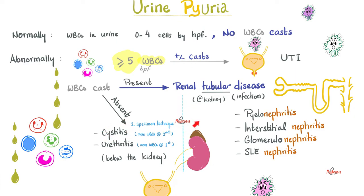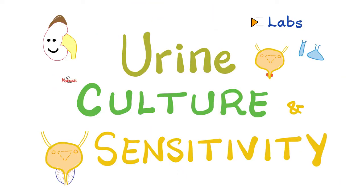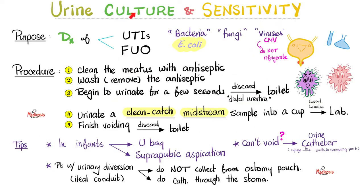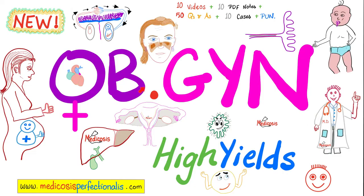Medicine makes so much sense once you understand what you're talking about. If I find white blood cells in the urine, the next step is urine culture, because I want to know which specific organism is causing this. For urine culture, it has to be a clean catch midstream sample. The most common cause of urinary tract infection is E. coli. Asymptomatic bacteriuria — for most people no big deal, but during pregnancy it's a big deal. Learn about asymptomatic bacteriuria, endometritis, pelvic inflammatory disease, vaginitis and more by downloading my OBGYN High-Yields course at medicosisperfectionalis.com.